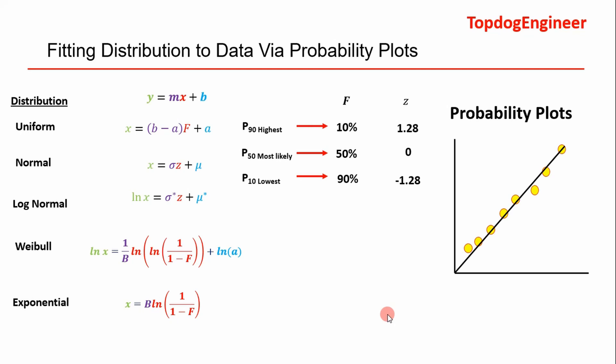P90 being our highest probability to exceed, P50 being our most likely, and P10 being our lowest probability to exceed, or our highest value that we get. So that would be like over here for P10 and our P90 would be down here. That's essentially it—that's how we do it.